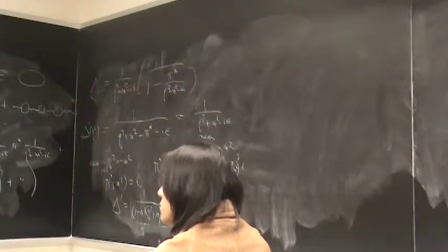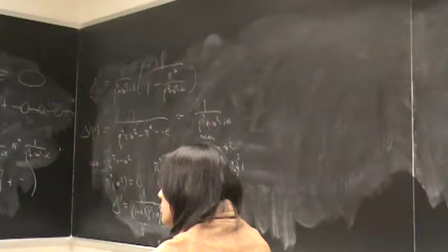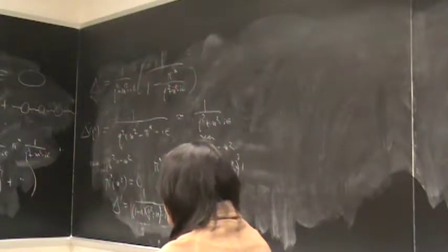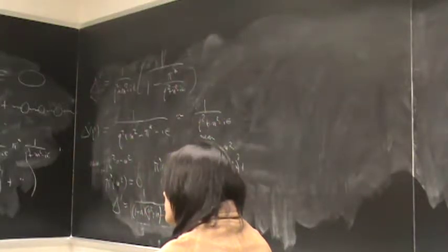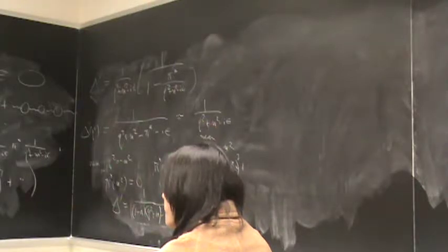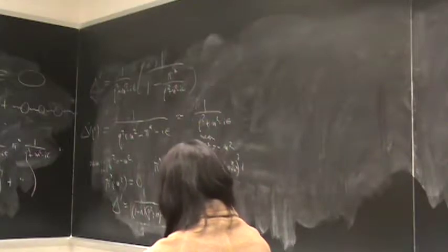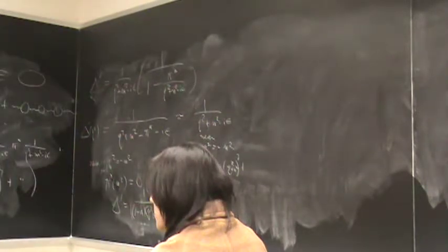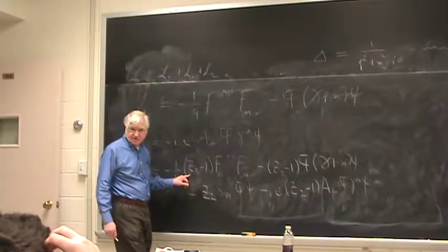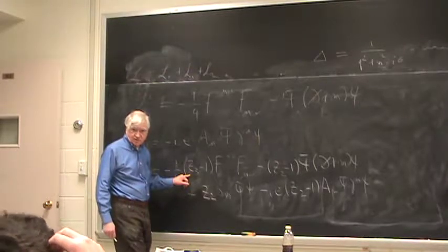Two homework problems were assigned. The first is to compute the area of the unit sphere in four dimensions; the hint is to compute the Gaussian e^(-x squared) in d dimensions in both rectangular and spherical coordinates and compare. The second homework problem is to show explicitly what the contribution of the counter term — bringing it down at lowest order — is.